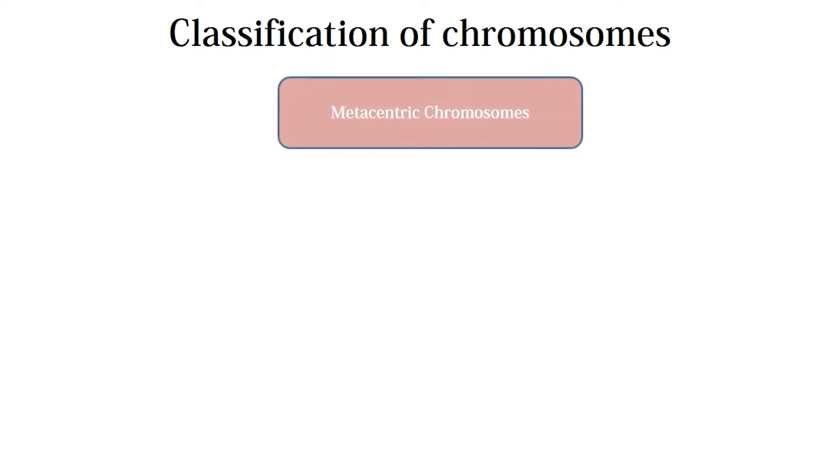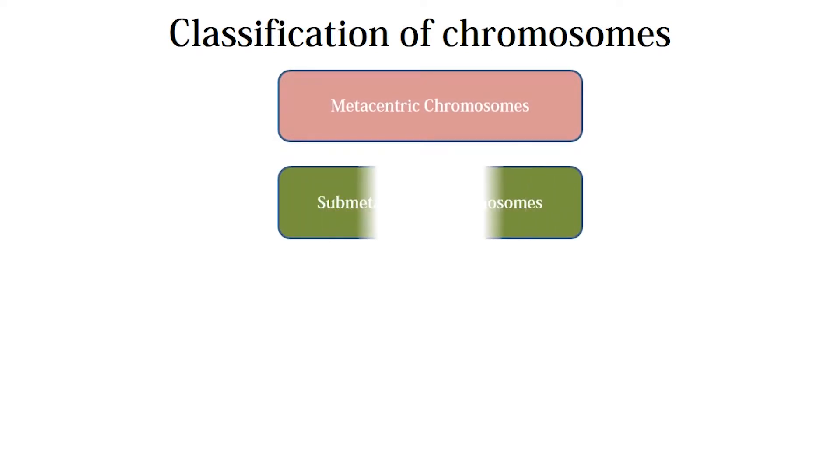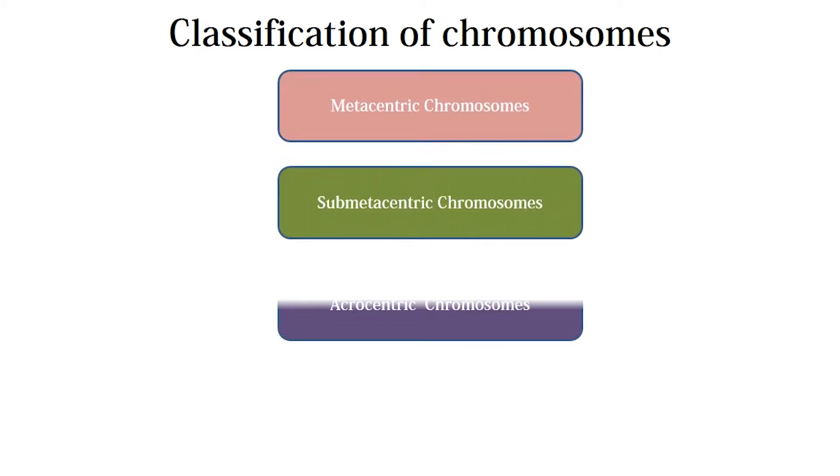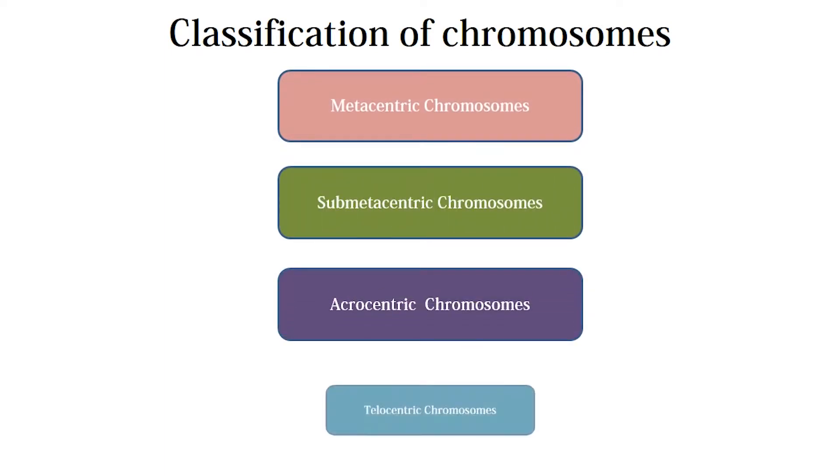Now the classification of chromosomes. Based on the position of the centromere, they are classified into four types: metacentric chromosomes, submetacentric, acrocentric, and telocentric chromosomes.